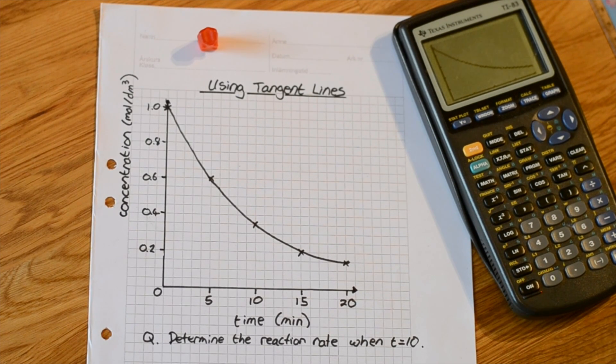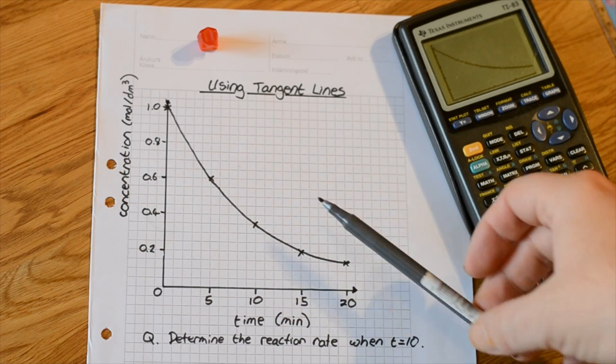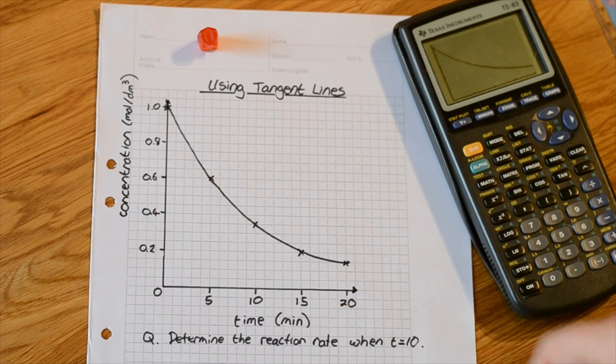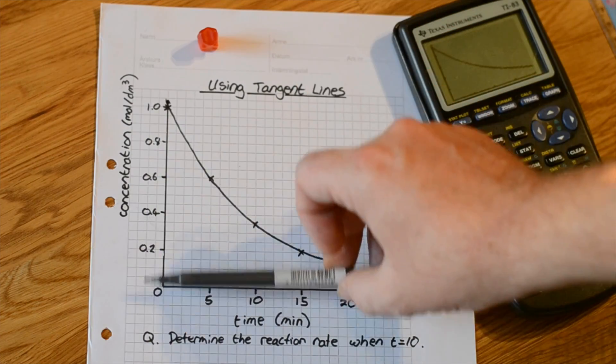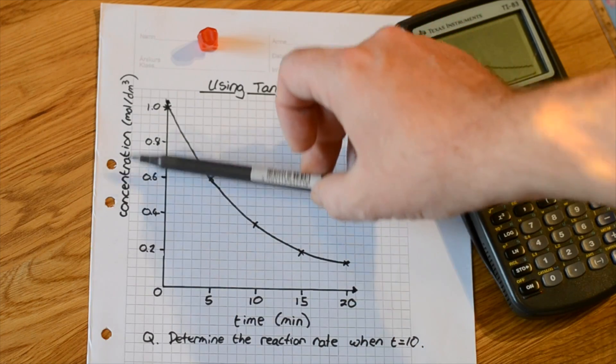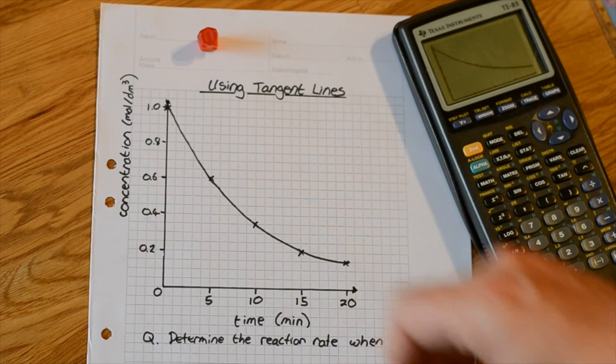Today we're going to look at using tangent lines. In this question we have a graph which is drawn previously using experimental data. Across the x-axis there's time. On the y-axis there's concentration of the substance. The substance is measured in moles per decimetre cubed.